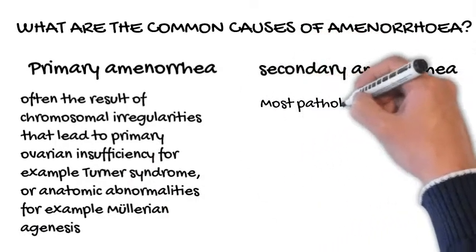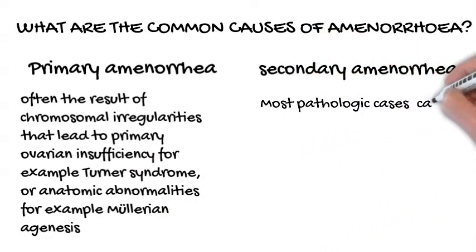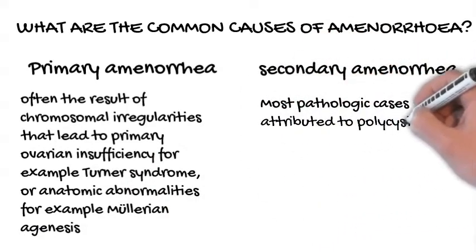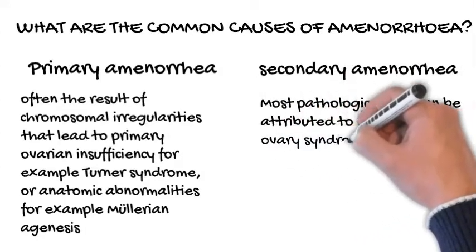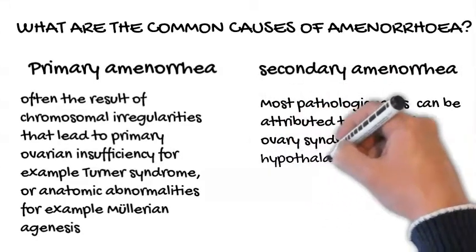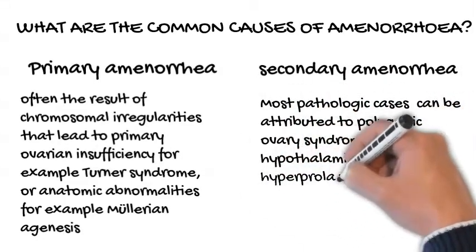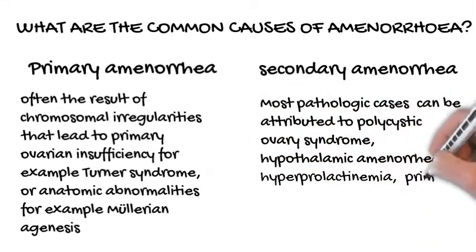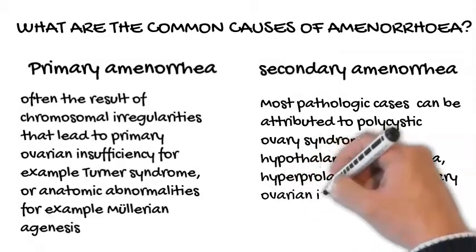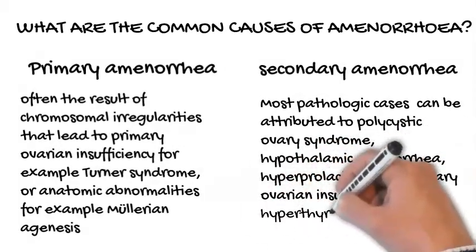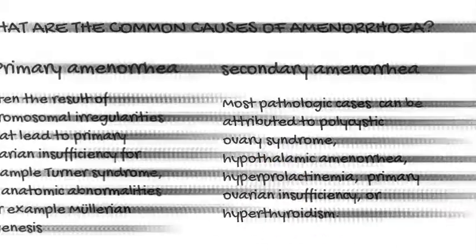Most pathologic cases of secondary amenorrhea can be attributed to polycystic ovary syndrome, hypothalamic amenorrhea, hyperprolactinemia, primary ovarian insufficiency, or hypothyroidism.